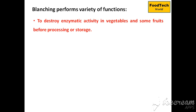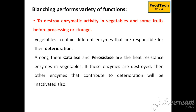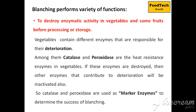Blanching destroys enzymatic activity in vegetables and some fruits prior to processing or storage. Vegetables contain different enzymes responsible for spoilage. Among these, catalase and peroxidase are heat-resistant enzymes. If these enzymes are destroyed, other spoilage enzymes will also be denatured. So catalase and peroxidase act as marker enzymes to determine whether the blanching process is successful.